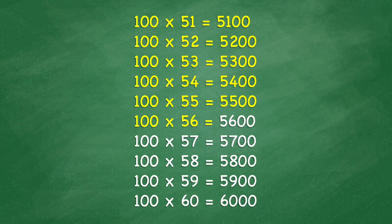100 times 56 equals 5,600. 100 times 57 equals 5,700. 100 times 58 equals 5,800. 100 times 59 equals 5,900. 100 times 60 equals 6,000.